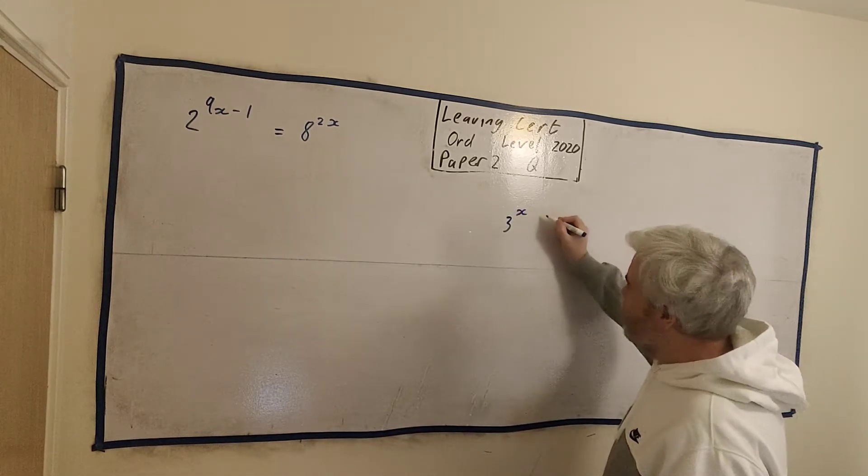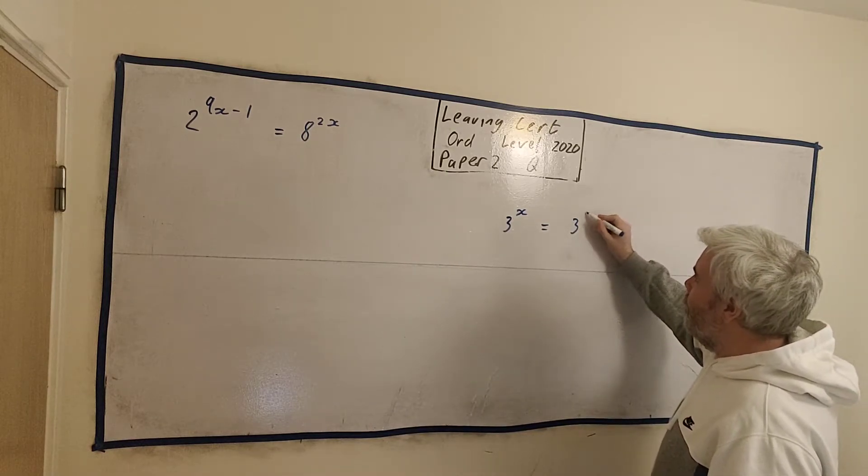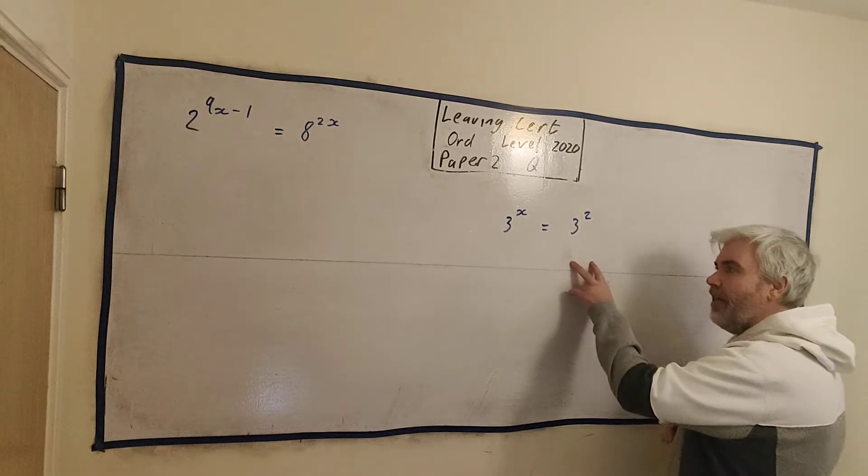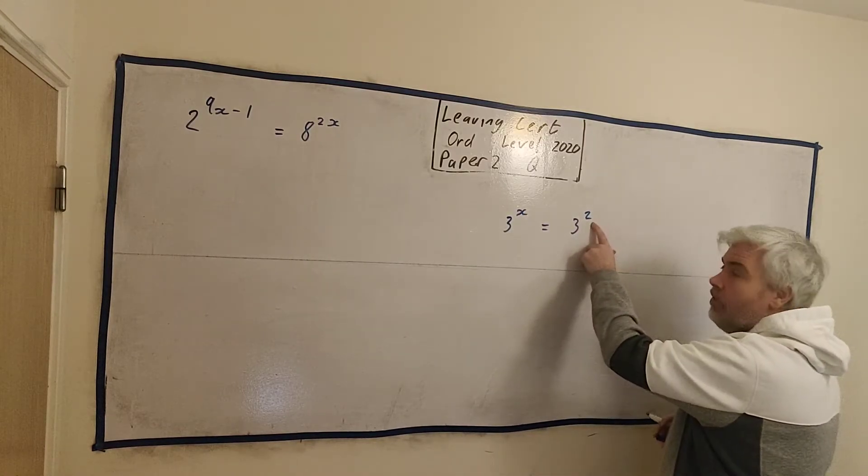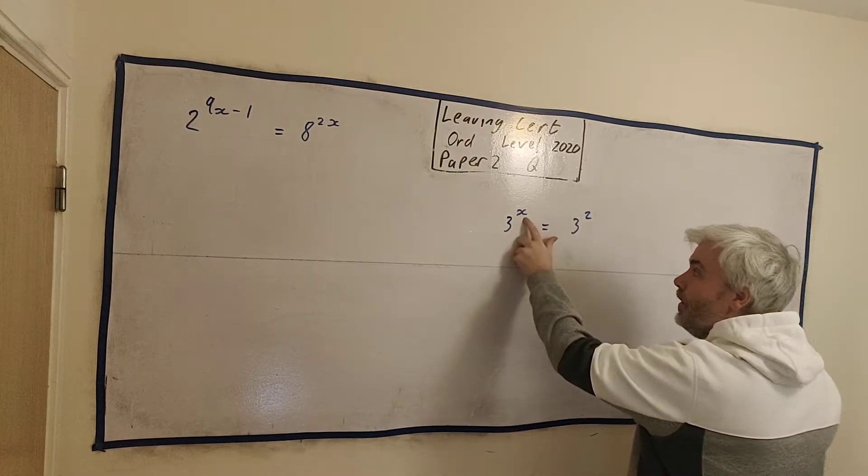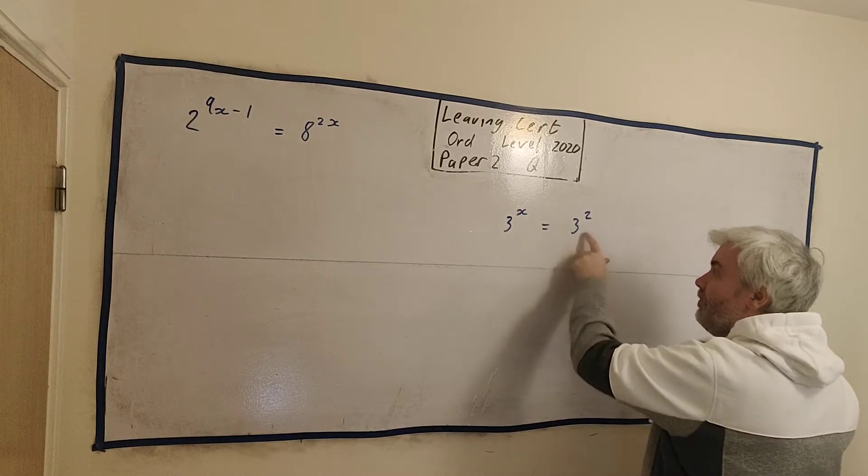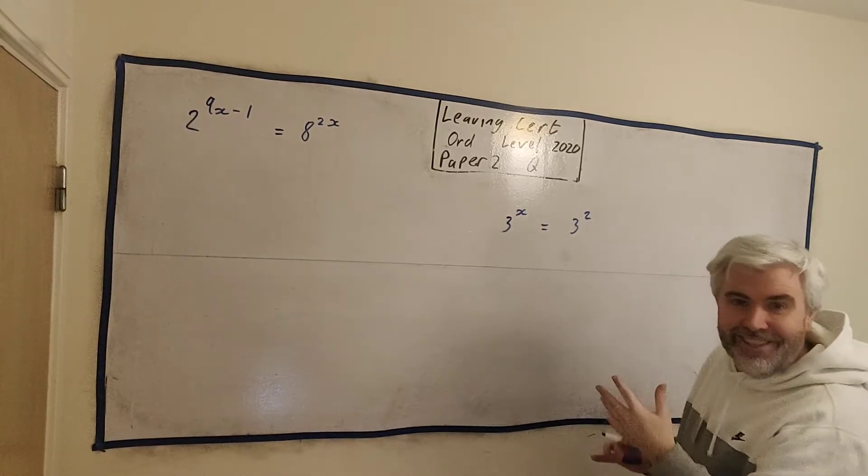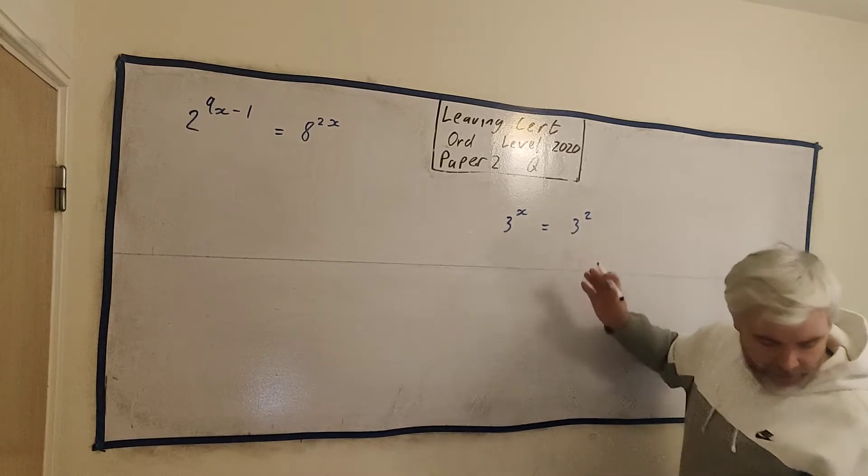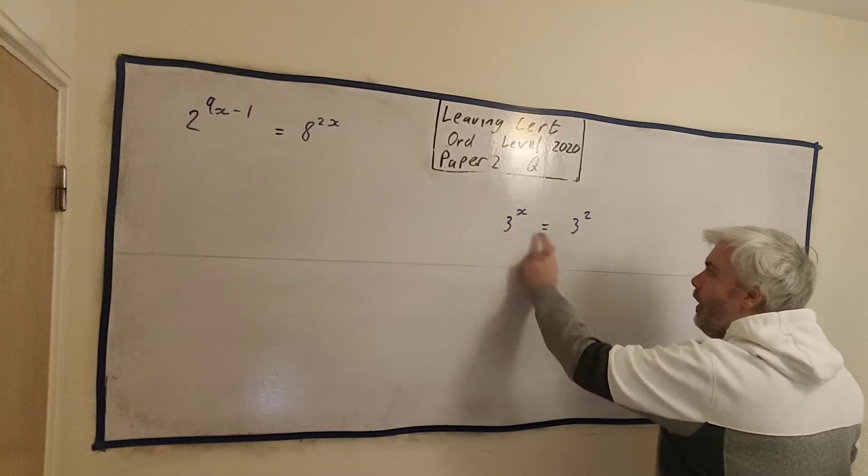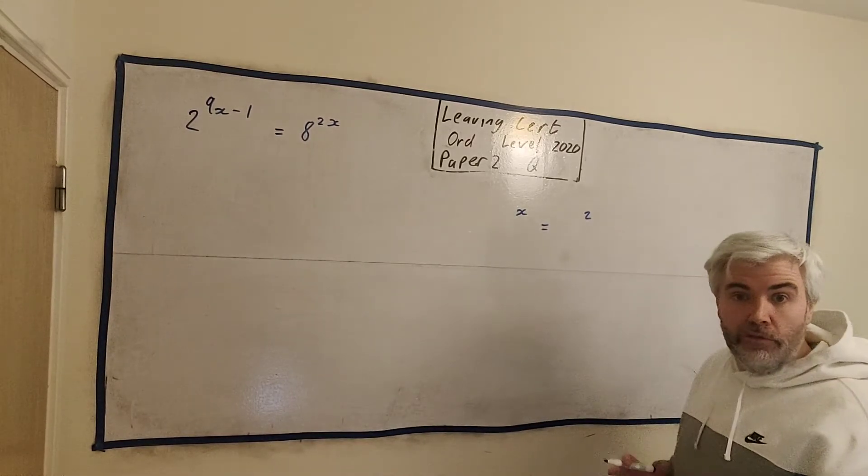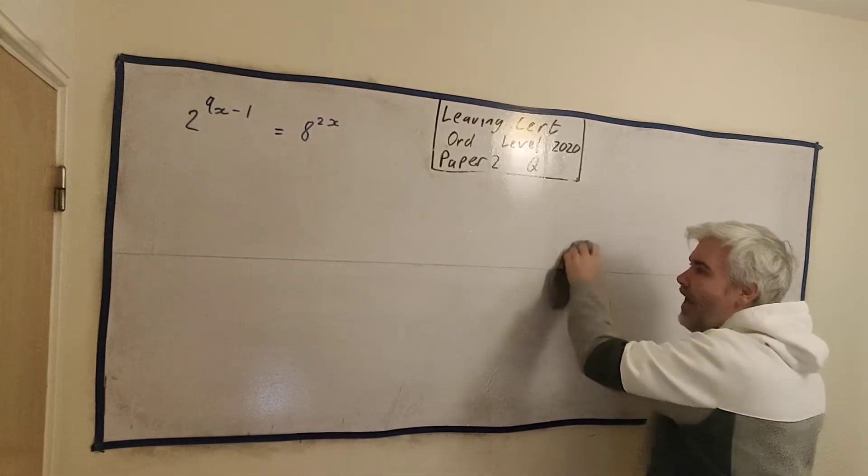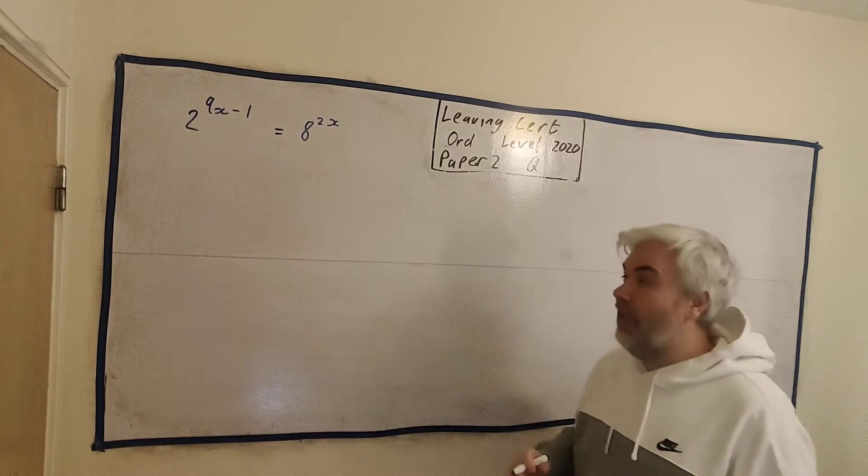To solve this, I'd like to just show you an idea. A simple idea. 3 to the power of x is equal to 3 to the power of 2. If I asked you what x is, it'd be quite easy. Well, x is 2. 3 to the power of something is equal to 3 to the power of, well, something. Whatever that something is. So, if we're given something like this, where both have a 3 here, we can just rub the 3s out and say x equals 2. That's how we solve these ones in our level.